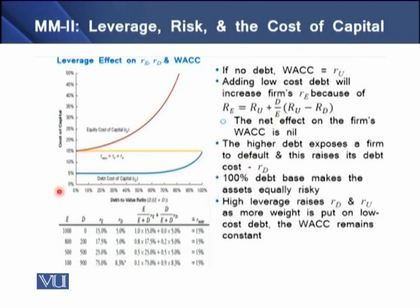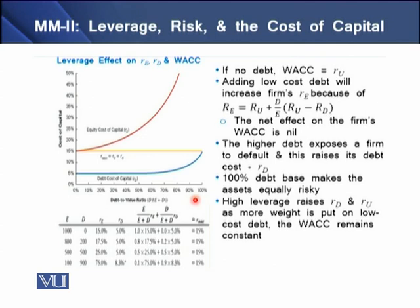The net effect on the firm's WACC is zero. As debt increases further, it exposes the firm to default risk, raising the debt cost from 5% to 15%. If the firm uses 100% debt, the firm's assets are equally risky. Higher leverage raises both the return on debt and the return on equity, but more weight is placed on the low-cost debt and the WACC remains the same.